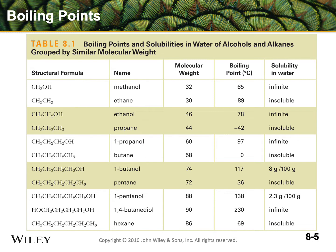Moving up one more carbon, we've added a single carbon and now we've started losing solubility in water. Butanol has a total of four carbons plus the OH group. It has an increased boiling point associated with its higher molecular weight plus hydrogen bonding, but its solubility is starting to go down in water. Those four carbon atoms are starting to not be pulled into solution by the hydrogen bonding — the hydrogen bonding has been outweighed by that non-polar portion of the chain.